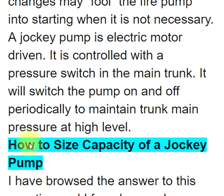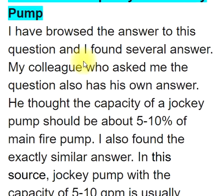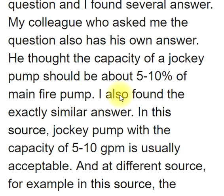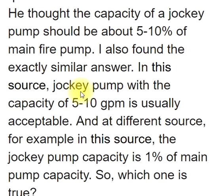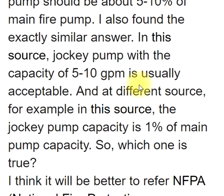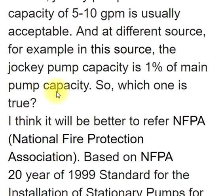How to size the capacity of a jockey pump? After researching this question, several answers were found. One common answer is that jockey pump capacity should be about 5–10% of the main fire pump. Another source states that a jockey pump with a capacity of 5–10 GPM is usually acceptable. A different source indicates the jockey pump capacity should be 1% of main pump capacity.